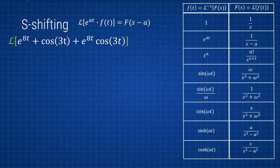We have this expression: we're going to take the Laplace of e^(at) plus cosine(3t) plus e^(at) times cosine(3t). You can see we have three different functions — an exponential, a cosine, and then an exponential times the cosine. We're going to take the Laplace of each one of those and see what we can identify.